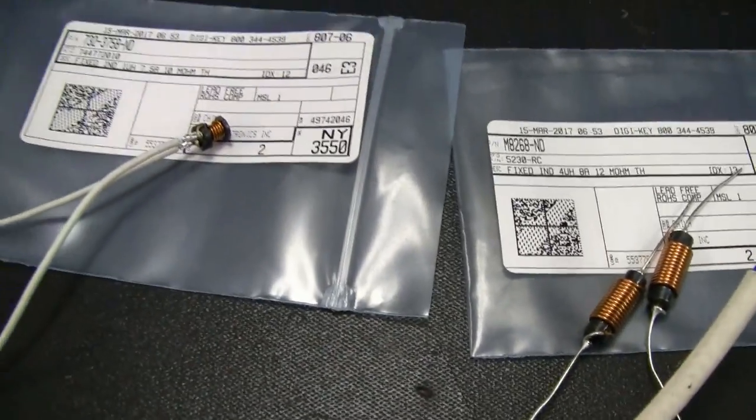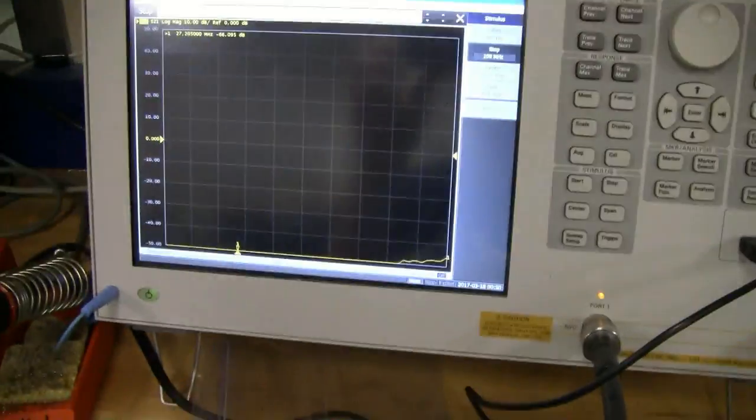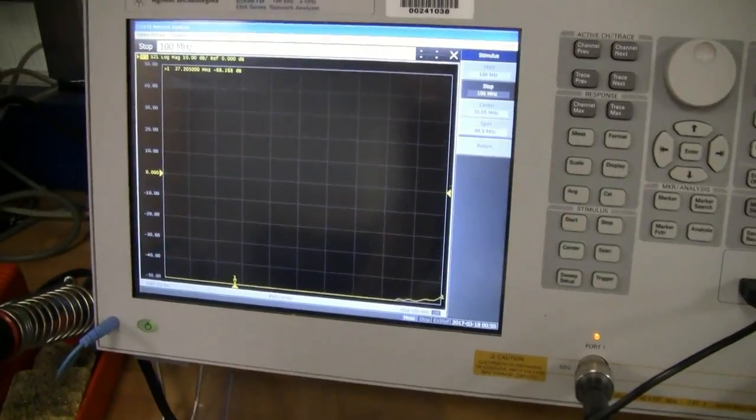You do need two of them, one for positive and one for negative, to really block out that noise. So I'm going to get these hooked up one at a time here to the network analyzer, and we'll see how they work.